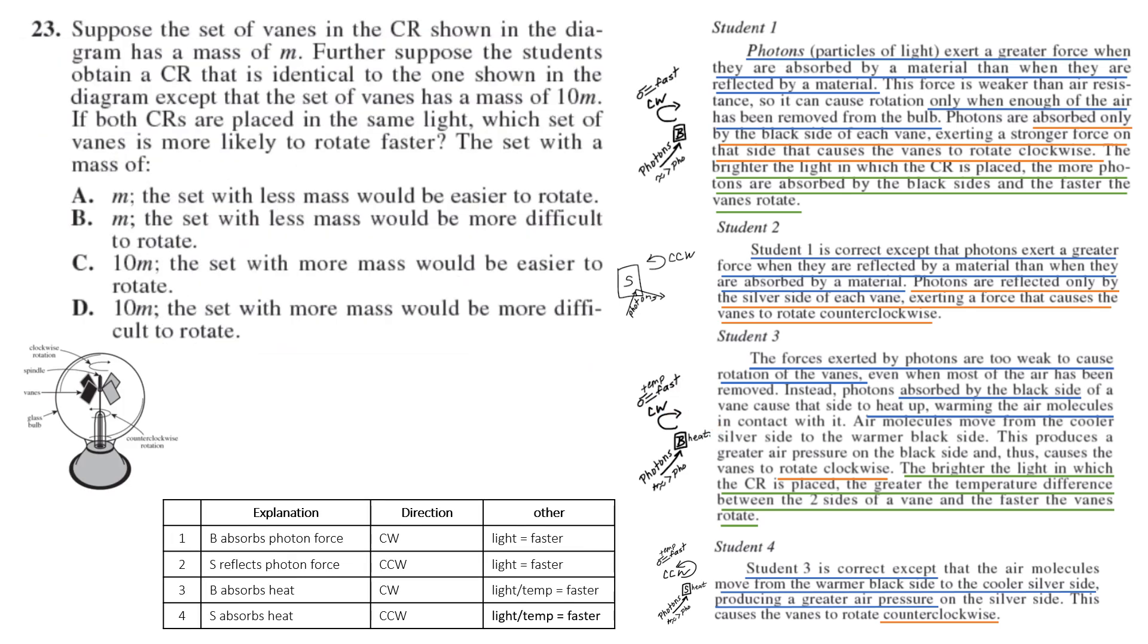Number 23 is a suppose question where you have to add information to extend your knowledge. Suppose the set of veins in the CR shown in the diagram, so the veins are these little things that are causing it to move, have a mass of M. So it doesn't matter what the mass is. Further, suppose the students obtain a CR identical, except the new one has a mass of 10 times M. If both are placed in the same light, which is more likely to rotate faster? We know from our reading that the force of air is greater than the force of the photons generally, particularly in student three and four. So the bigger the vein, the heavier the vein, it's more difficult to rotate. So choice A, a little bit of science reasoning, science knowledge there.